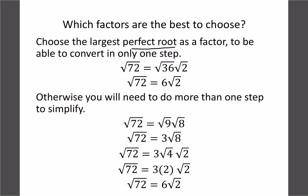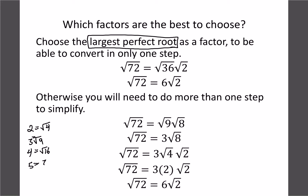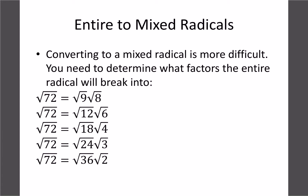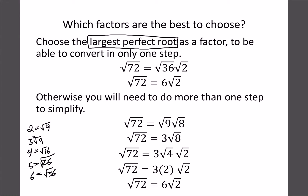You always want to choose the largest perfect root. I have a perfect root chart posted on the Moodle site. Remember: 2=√4, 3=√9, 4=√16, 5=√25, and so on. Go through that list and pick the biggest perfect square that divides into your number. For √72, looking at all our factor options, 36 is the largest perfect square, so that's the one we want.